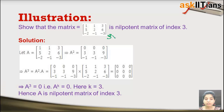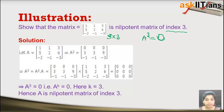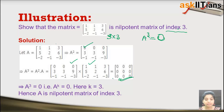Here is an illustration: we need to show that this 3×3 matrix is nilpotent of index 3, meaning we need to prove A³ equals the zero matrix. Using matrix multiplication, we first calculate A², then multiply by A to get A³, which comes out to be the zero matrix. Hence A is a nilpotent matrix of index 3.